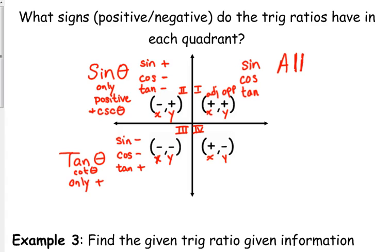And then in the fourth quadrant — do you see a pattern starting? Which one do you think is going to be positive? Cosine is the only one left. So I'm not going to go through the whole explanation, but we'll just say cosine and, therefore, secant are positive.